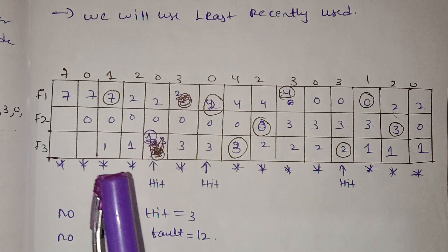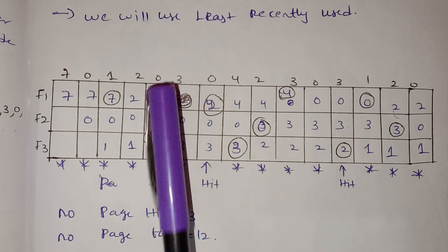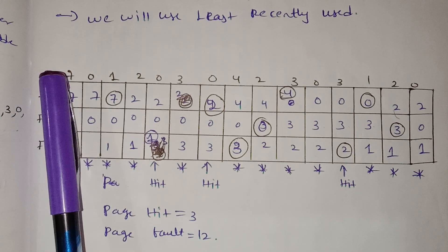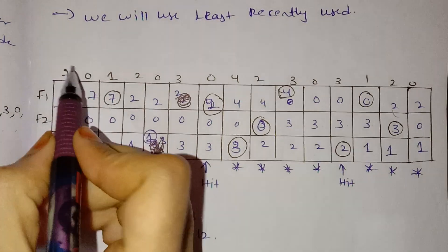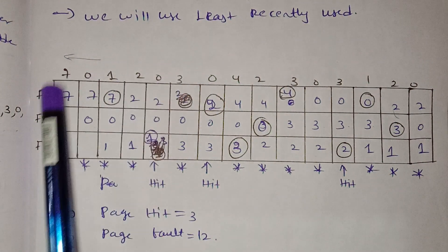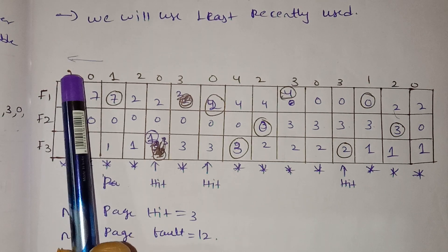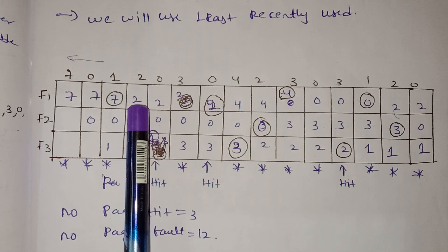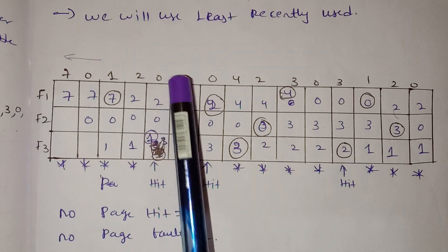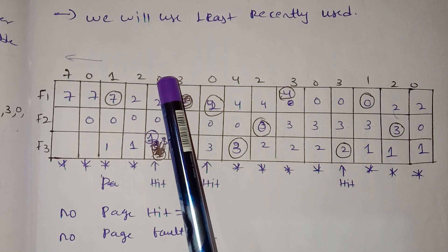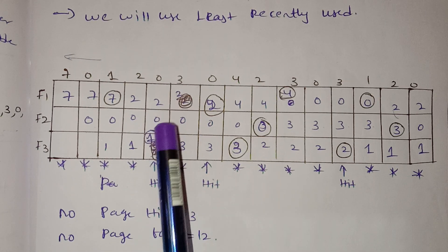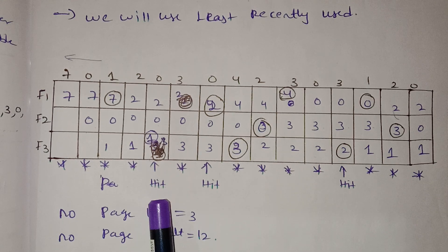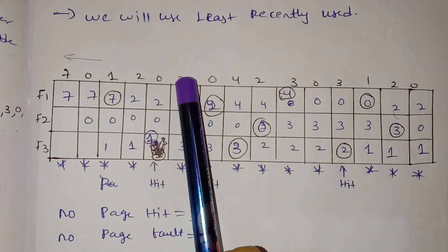For LRU, we use the string 7, 0, 1 with 3 frames. First, 7 enters — page fault. Then 0 enters — page fault. Then 1 enters — page fault. So frames are 7, 0, 1. Next we add 2. Now we compare and replace using LRU logic — 7 is least recently used, so we replace 7 with 2.